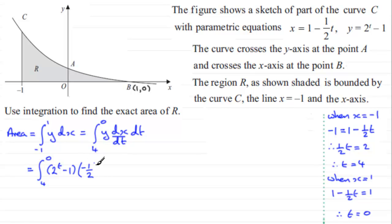Now if we just clean this up, let's bring the minus a half, because it's a constant, let's bring it out the front of the integral. So we've got minus a half integrated from four to zero of two to the power t minus one, and that's integrated with respect to t.